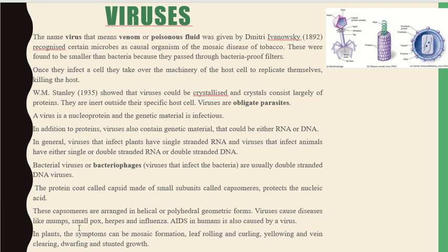Viruses cause diseases like mumps, smallpox, herpes, and influenza. AIDS in humans is also caused by a virus. In plants, symptoms can be mosaic formation, leaf rolling, curling, yellowing, vein clearing, dwarfing, and stunted growth. Here you can see pictures of viruses — a bacterial virus, a plant virus, and an animal virus.